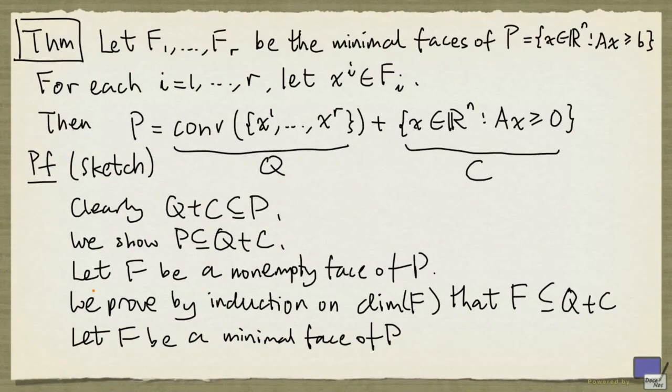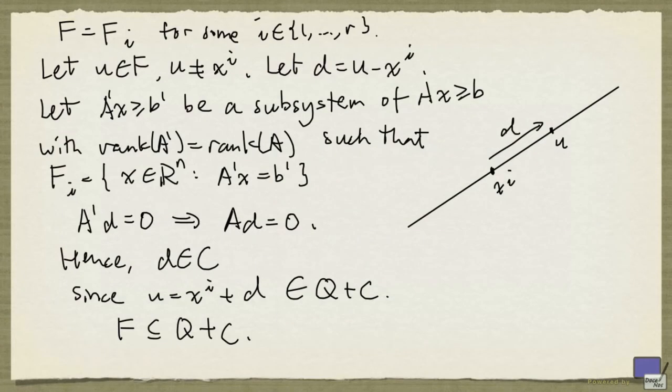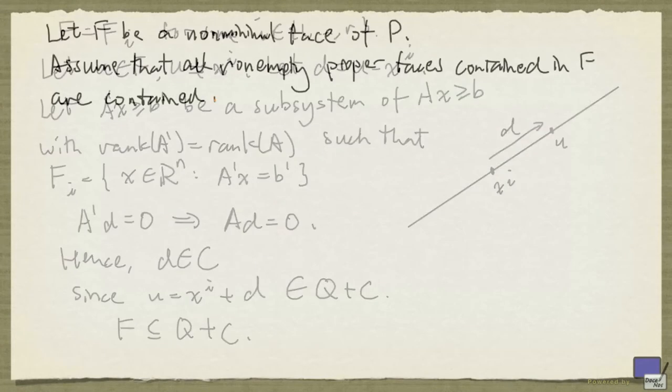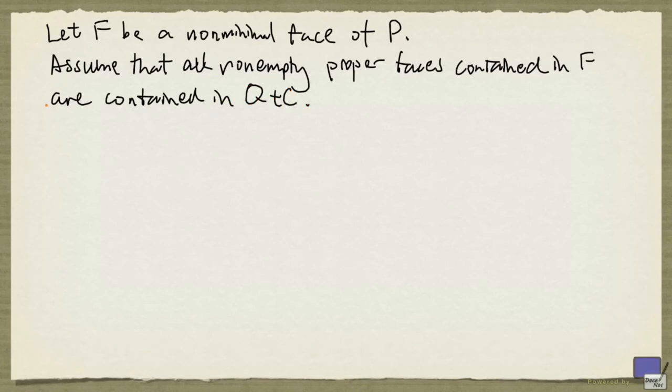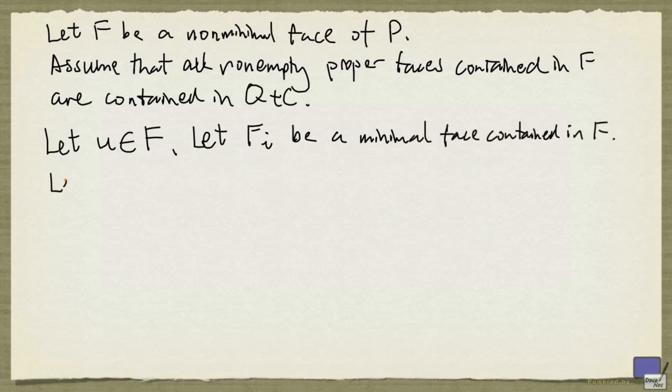So the next thing we need to do is, we want to pick some non-minimal face of P, and prove that it is again a subset of Q plus C. As before, we pick an arbitrary element U from F, and let Fi be a minimal face contained in F. And we take D to be U minus X^I. If D is in C, then we are done, because U will be in Q plus C. So suppose that D is not in C.